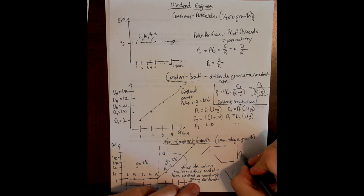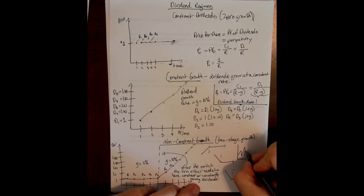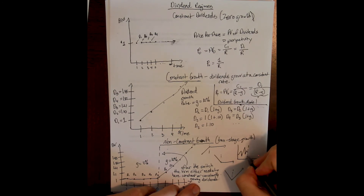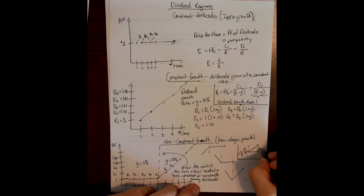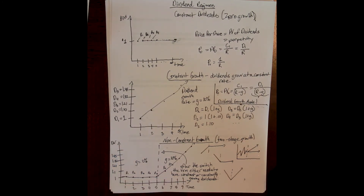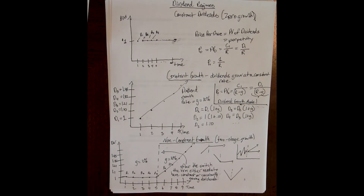We could even have an example where the first regime is random — dividends all over the place — and then we switch to constant or constantly growing dividends. This is also an example of a two-stage model that we could solve using the methodologies we are going to lay out in the later examples.